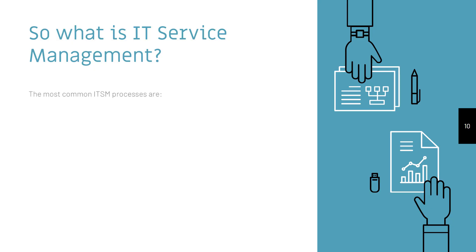So what are some of the common ITSM processes? The most common ITSM processes are incident management. This process deals with the management of IT issues that are affecting IT services. An example of an incident could be that the Wi-Fi is down within an office building. Incident management deals with the support and resolution of incidents, ensuring that IT services are up and running smoothly.